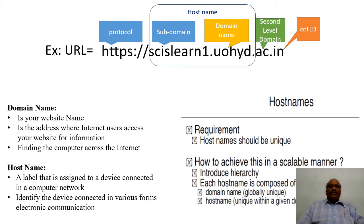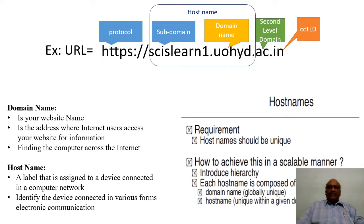By this time many of you are aware of how we get information which is present on web servers. For this you enter a URL — Uniform Resource Locator — like entering https://scislearn1.gohyd.ac.in. This particular string has several attributes. In this string there are two important things: the host name and the domain name. A domain name is basically your website name, like scislearn1.uhyd.ac.in or simply uhyd.ac.in.